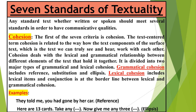Starting with the first standard: cohesion. It is a text-centered term related to the way how the text components present at the surface — for example references, ellipses, and conjunctions — work together to make our text cohesive. It deals with the lexical and grammatical relationships between different elements of the text that hold it together. It is divided into two types: grammatical cohesion, which includes reference, substitution, and ellipsis; and lexical cohesion, which includes lexical items. Conjunction sits at the borderline between these two.